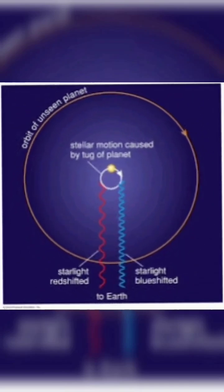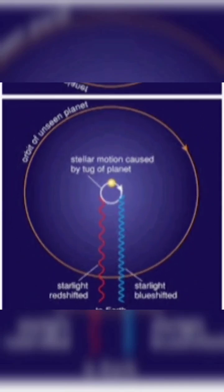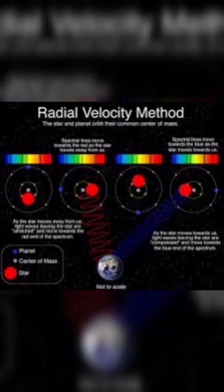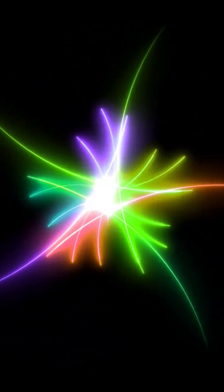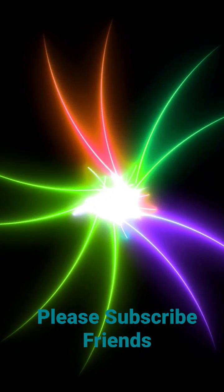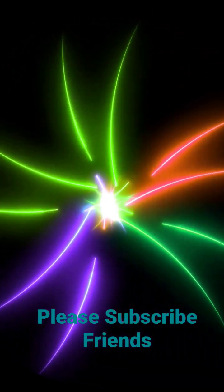As the planet orbits the star, it causes the star to wobble back and forth, which can be detected through spectroscopic observations. By analyzing the changes in the star's spectrum, astronomers can determine the mass and orbit of the planet.